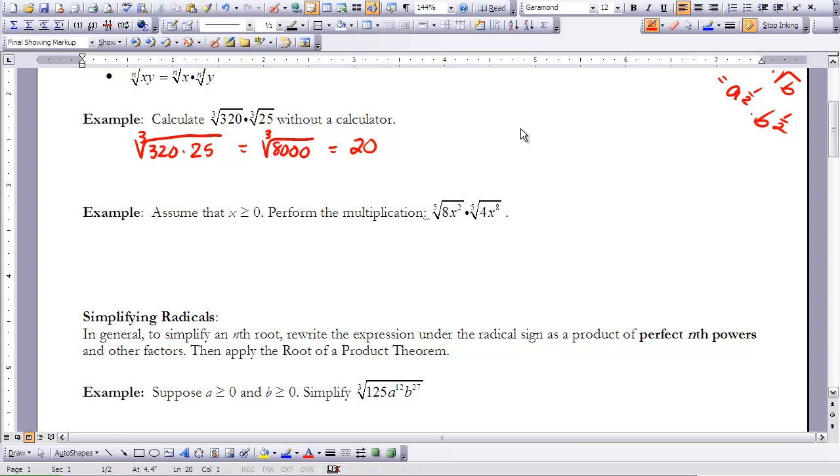Let's look at another example. We're going to assume that x is greater than or equal to 0, and we're going to perform the multiplication of the fifth root of 8 times x squared times the fifth root of 4x to the 8th. The way we'll approach that is this equals the fifth root of 32 times x to the 10th. The fifth root of 32 is 2, and the fifth root of x to the 10 is x squared.